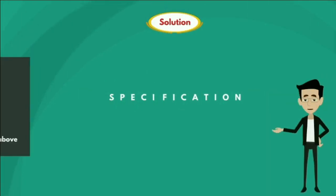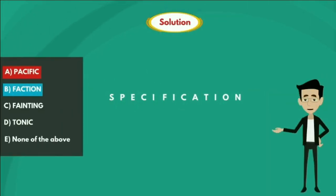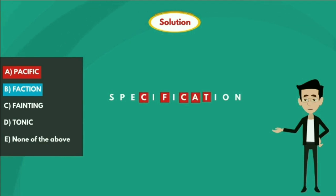Option B - FACTION. If we observe the given option, all the letters F-A-C-T-I-O-N are present in the given word SPECIFICATION. So option B is false.